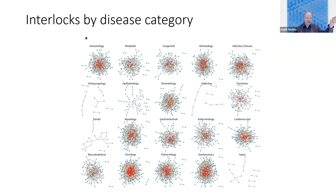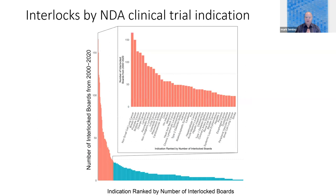You might say, wait a minute — there are different immunology drugs, and maybe they don't all compete with each other. So to drill down on that, we actually measured NDA clinical trial indications. These are companies that are filing NDAs for drugs to treat precisely the same disease — they are much more likely to be competitors. And even there, we see a remarkable number of interlocks. In some areas, like non-small cell lung cancer, there are more than 150 interlocked boards just in this particular disease treatment indication.